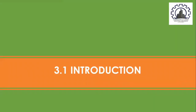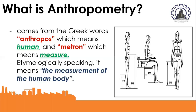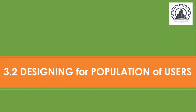Today, we will discuss first the introductory part of our lesson. What is meant by anthropometry? It comes from the Greek words anthropos, which means human, and mechon, which means measure. Etymologically speaking, it means the measurement of the human body.